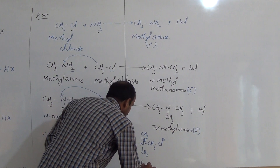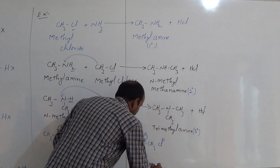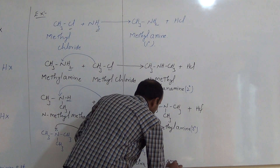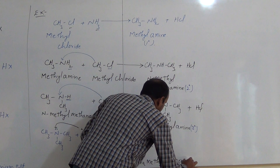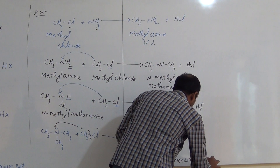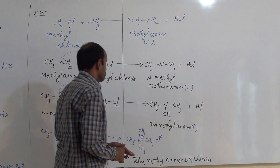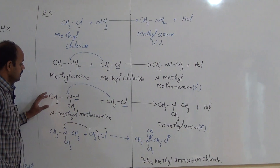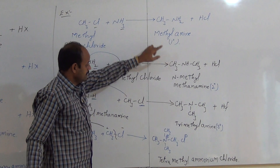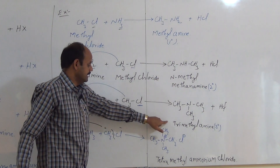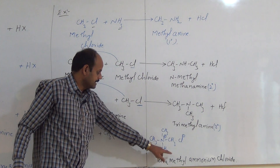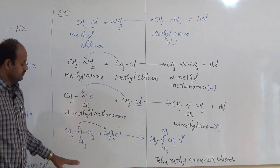Again, the tertiary amine reacts with one more methyl chloride CH3Cl. After breaking this bond, CH3+ and Cl- are formed. CH3+ attacks on nitrogen using the lone pair of electrons, giving (CH3)4N+ Cl-. There are four methyl groups — tetra — so this is tetramethylammonium chloride. Thus by ammonolysis of methyl chloride we get methylamine (primary), dimethylamine (secondary), trimethylamine (tertiary), and tetramethylammonium chloride (quaternary ammonium salt).